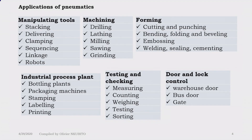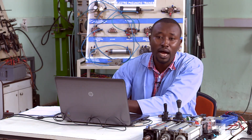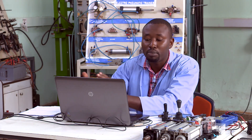Pneumatics has many applications, such as manipulating tools like robots, linkages, sequencing, and clamping. In industrial plants we see pneumatics in painting plants, packaging machines, stamping, labeling, and printing. At checking stations in industry we have measuring, counting, weighing, testing, and sorting. Even on vehicles, doors are operated by pneumatic systems — for example warehouse doors, bus doors, or gates.